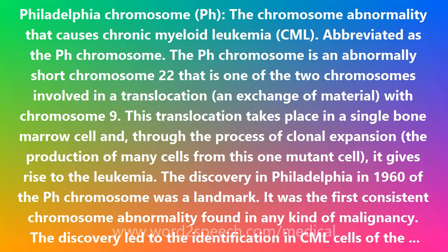The ABL gene encodes a tyrosine kinase enzyme whose activity is tightly regulated. In the formation of the Ph translocation, two fusion genes are generated: BCR-ABL on the Ph chromosome, and ABL-BCR on chromosome 9 participating in the translocation. The BCR-ABL gene encodes a protein with deregulated, uncontrolled tyrosine kinase activity.